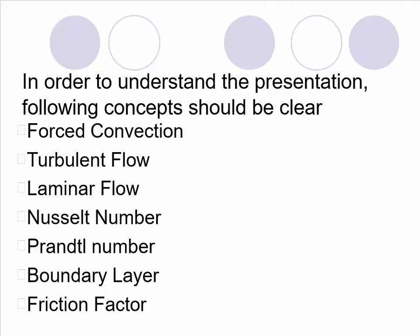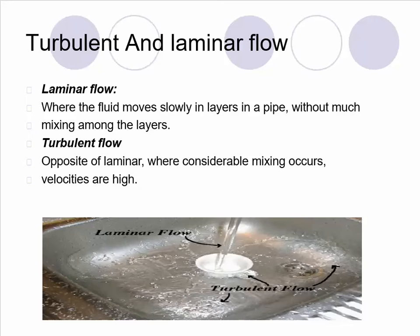Then we have turbulent flow. As you know, the flow which has a Reynolds number more than 4000 is a turbulent flow. And laminar flow is a flow at which the speed of the flow is below 2000 Reynolds number. When the fluid moves slowly in layers in a pipe without much mixing the layers, and the Reynolds number should be less than 2000, that is known as laminar flow.